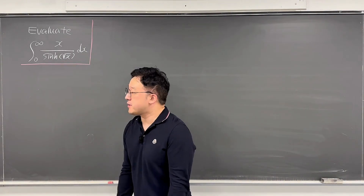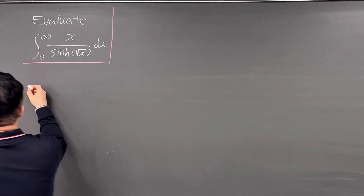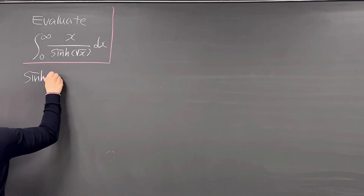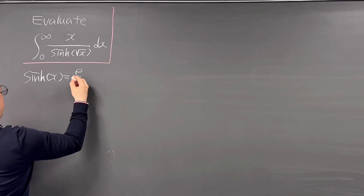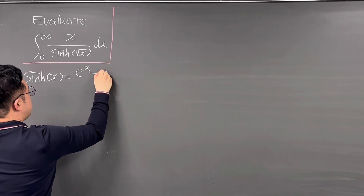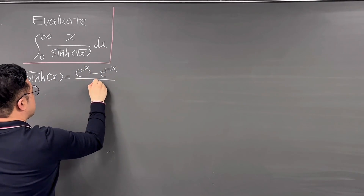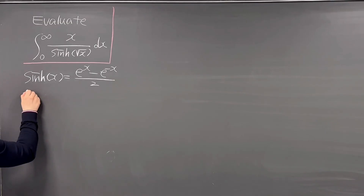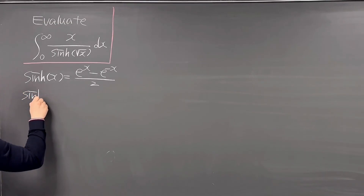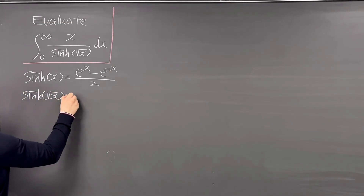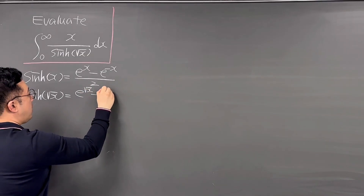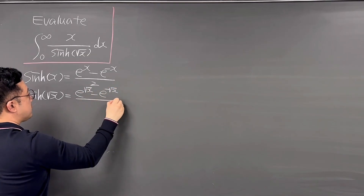First, let's use the complex form of sinh(x), that is the same as e to the power of x minus e to the power of negative x, over 2. We have sinh(√x) in the denominator, so sinh(√x) is the same as e to the power of √x minus e to the power of negative √x, over 2.